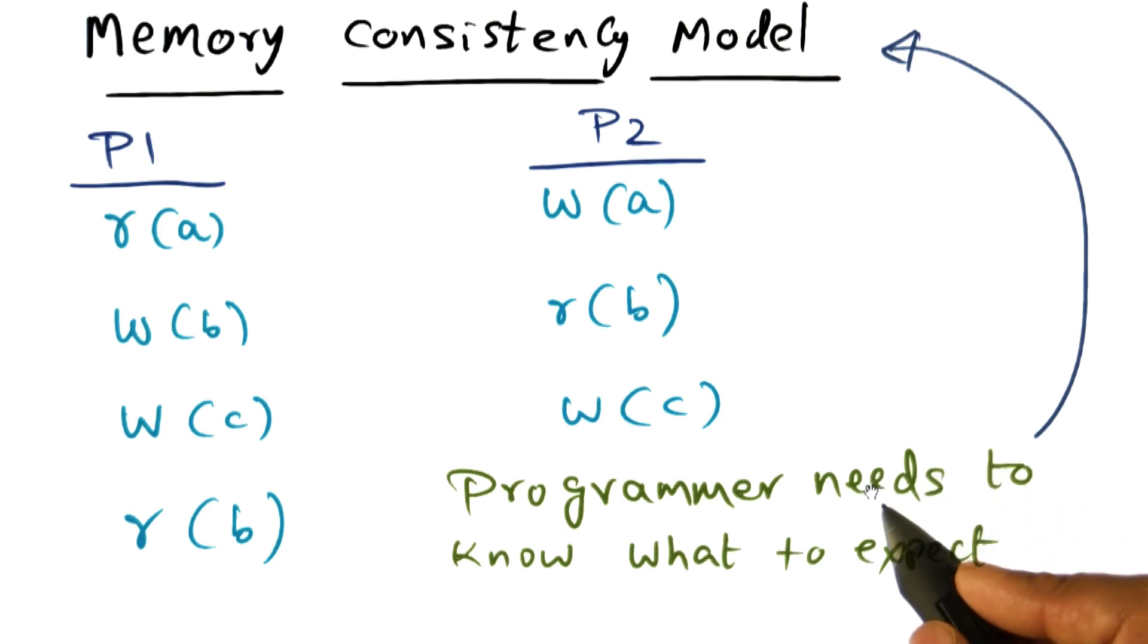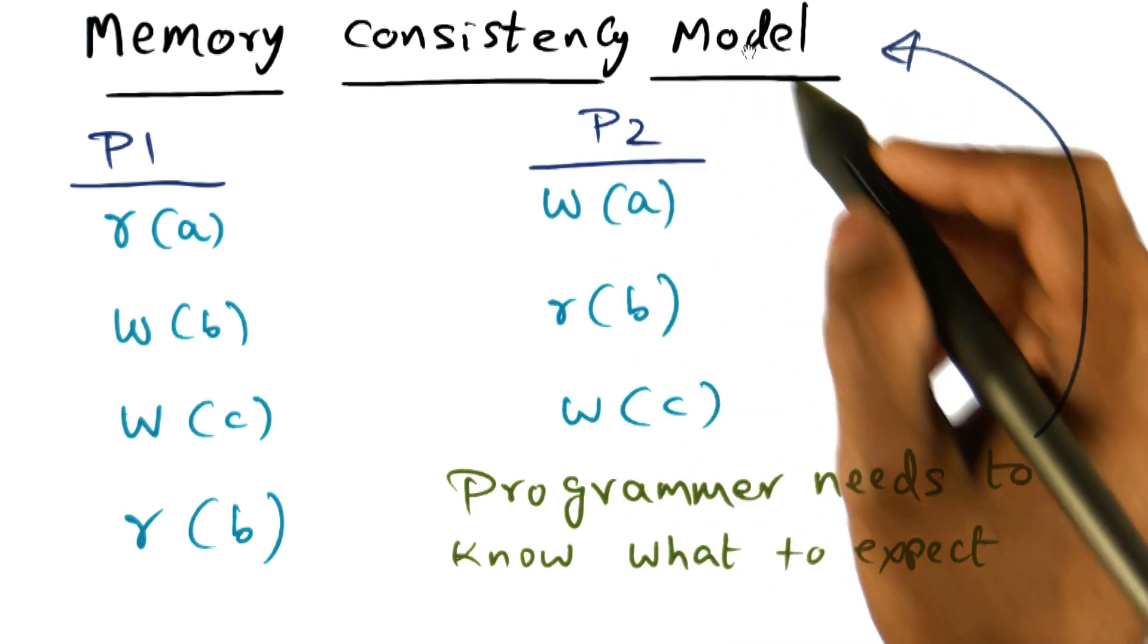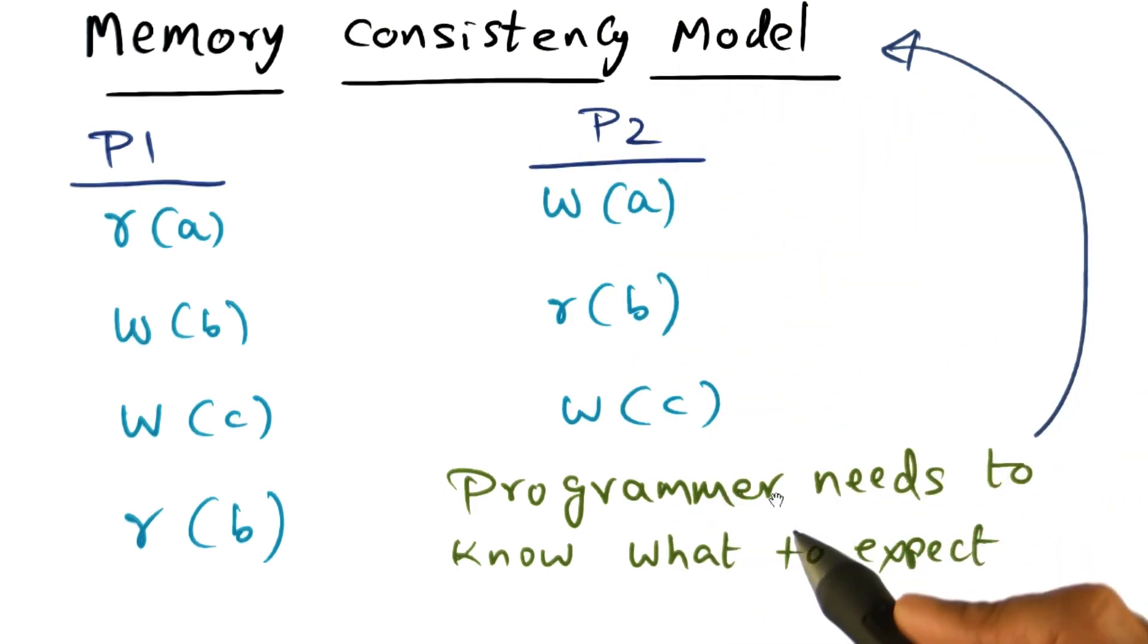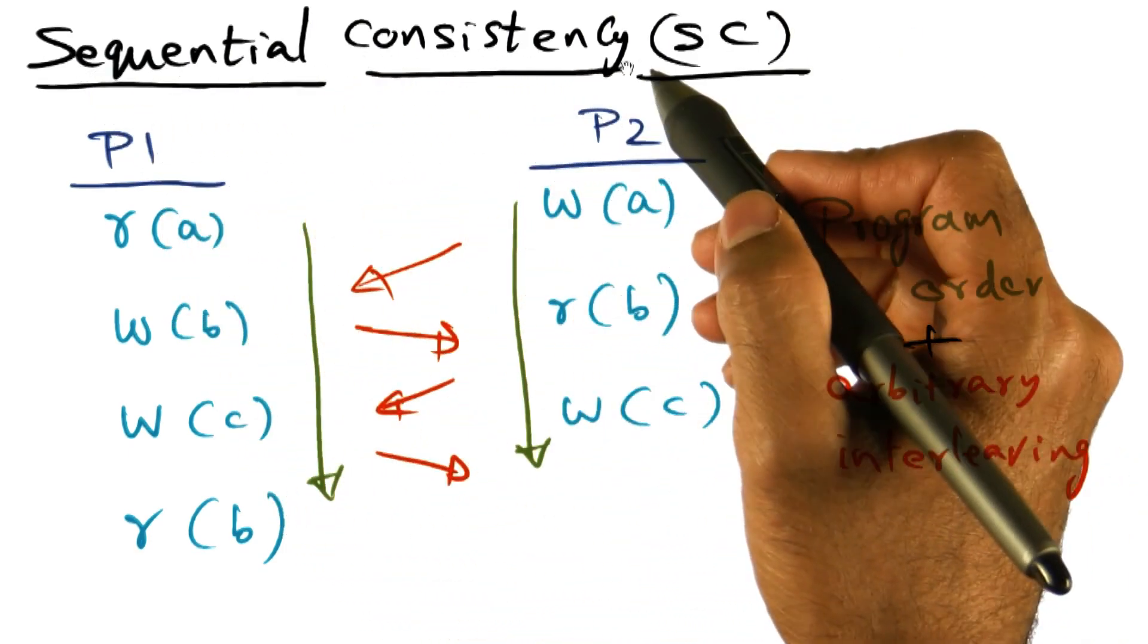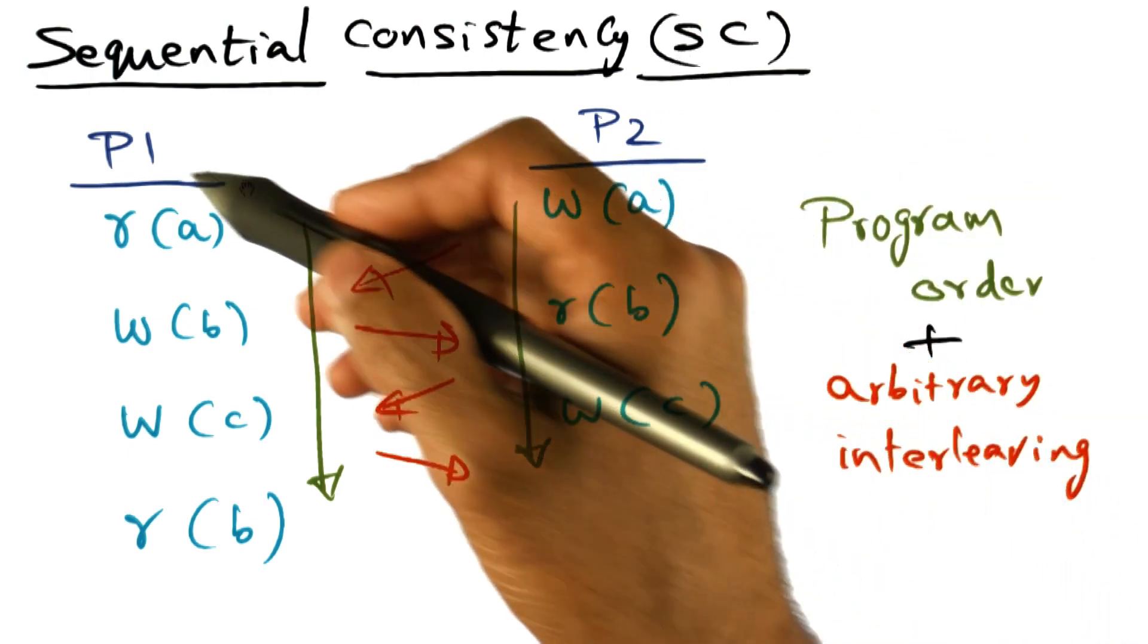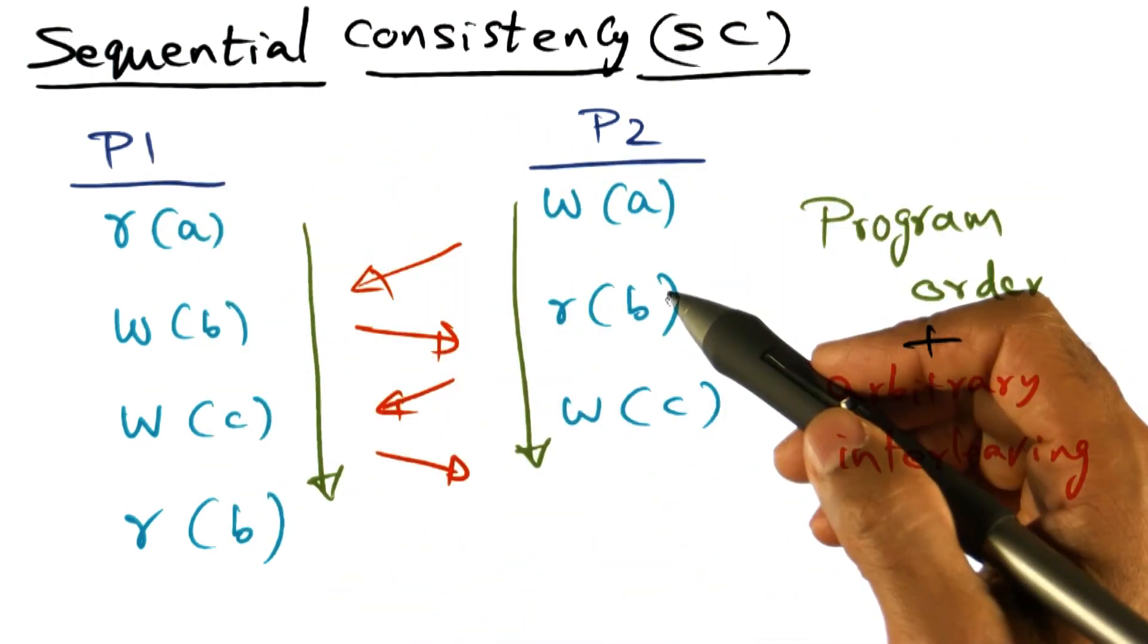As a programmer, you don't want any surprises. And this is the purpose of the memory consistency model to satisfy the expectation of the programmer. So I'm going to talk to you about one particular memory consistency model, which is called a sequential consistency memory model. And you consider the accesses from P1 and P2.